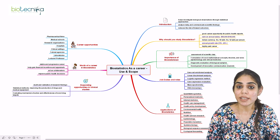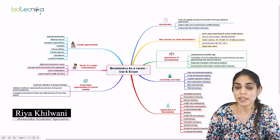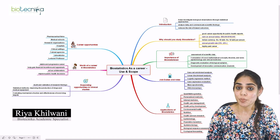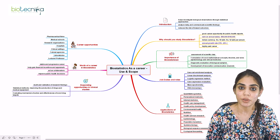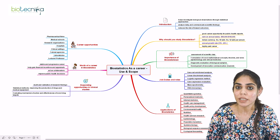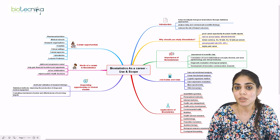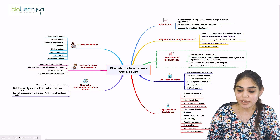Biostatistics is a field of science that helps investigate biological data through statistical methods. It is a field that has made it easier to study life sciences and medicine and has addressed a multitude of factors. If you are among those who wanted to contribute to the scientific community, you could be the next biostatistician. This is Rhea from Biotechnica, and today's topic is biostatistics as a career — its use and its scope.